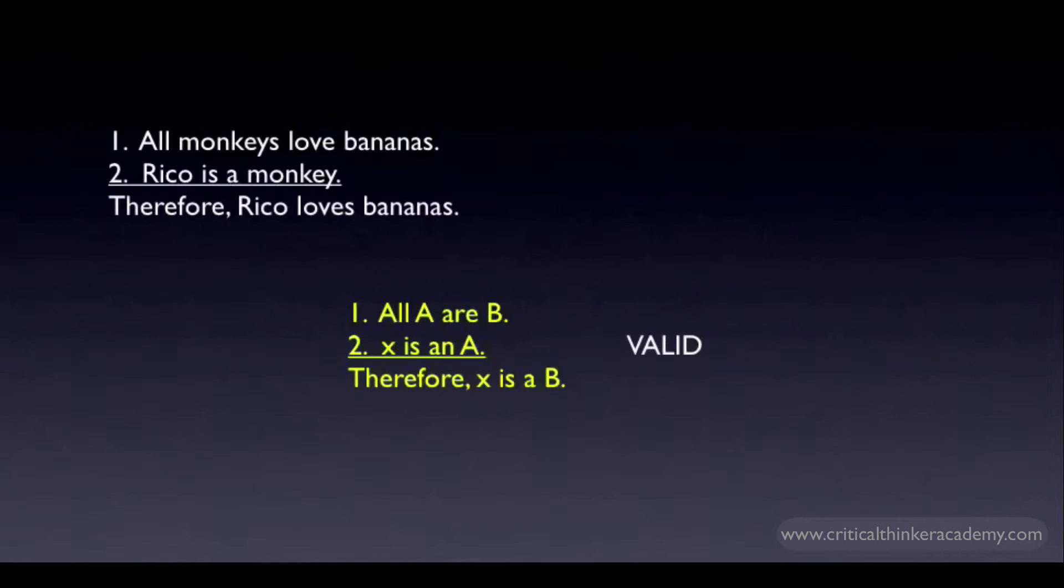Structurally, it has the following form. All A are B. X is an A, therefore X is a B. In the propositional logic course, I talked about the semantics of categorical claims like this, and I recommend checking that out for a more detailed discussion of categorical claims.